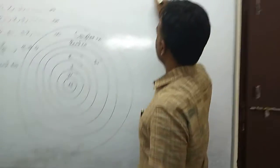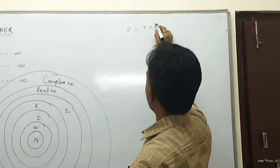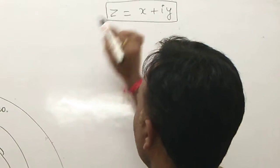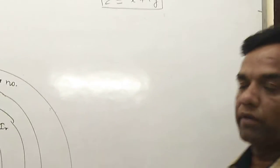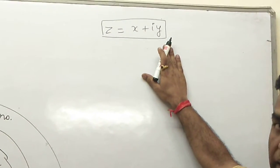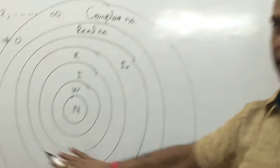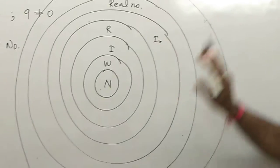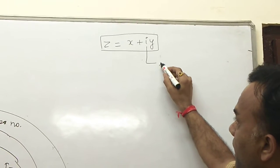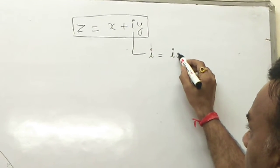In the complex number, the general form is z equal to x plus i·y. Here x and y are real numbers. Now we introduce the symbol i, which is called iota. Why is this symbol called iota? Because we studied quadratic equations in 10th class and this symbol arises from there.